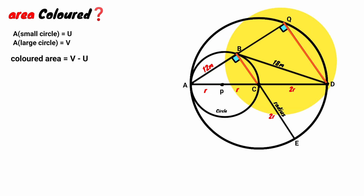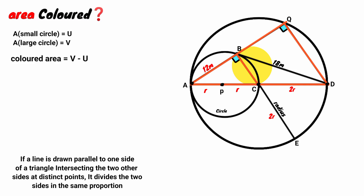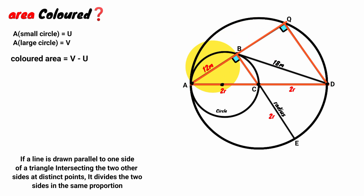From this triangle, line QD is a side, and we have line BC drawn parallel to it, connecting two sides of the triangle. By the Basic Proportionality Theorem (Thales' theorem), when a line is drawn parallel to one side of a triangle intersecting the two other sides at distinct points, it divides those two sides in the same proportion. We see that BC bisects one side, therefore it also bisects the other side. This segment is given as 12 meters, so the other must also be 12 meters.